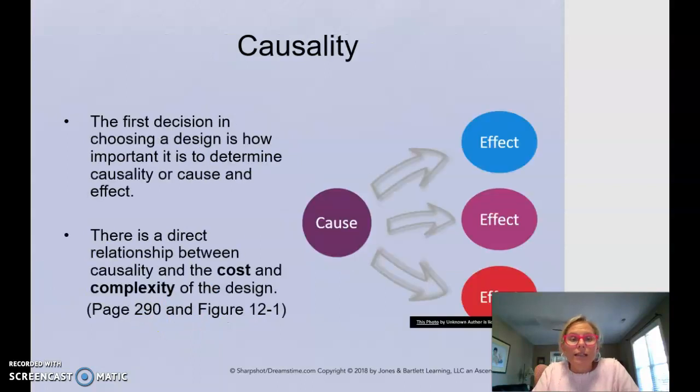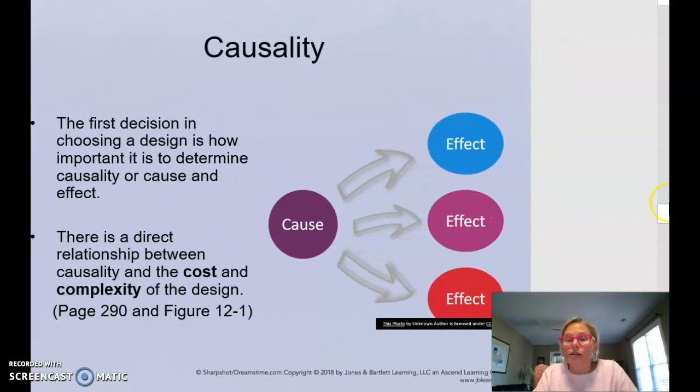So now let's talk about the concept of causality. So make sure that you understand this. And I have talked about this to you all before, but I'll reinforce it on this video. So the first decision in choosing a design is how important is it for you as a program to determine causality or cause and effect? To be able to say, because A happened, then we got B effects because of A. Because of the YMCA program, students had higher grades in school. So students moved more, students made better choices with their diet and ate more vegetables.